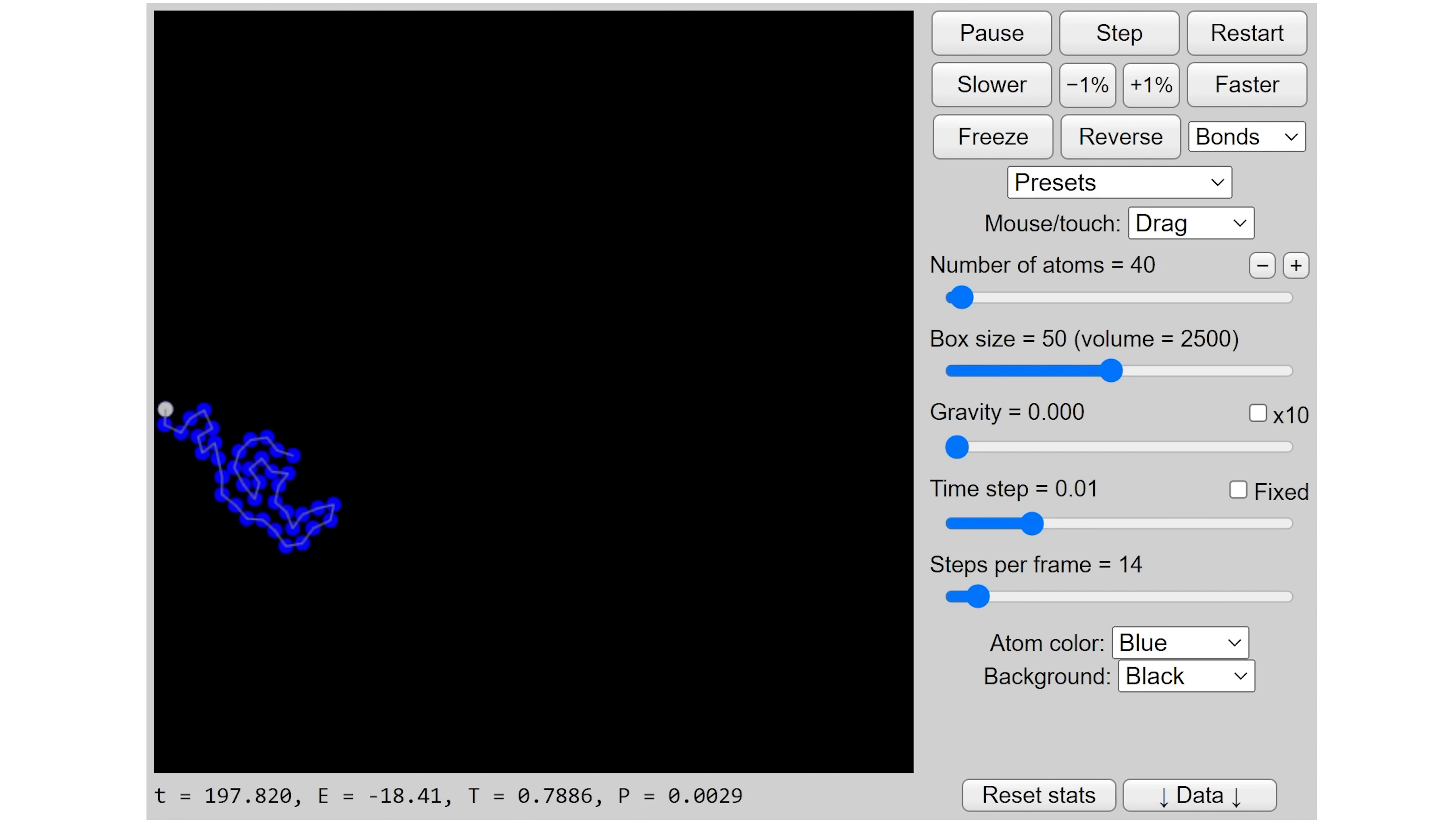There isn't some force that's making them coil together like this. It's just that statistically there are more ways to be in a coiled state than a straight state. If we wait long enough, sometimes randomly it'll pop out straight again for a split second.